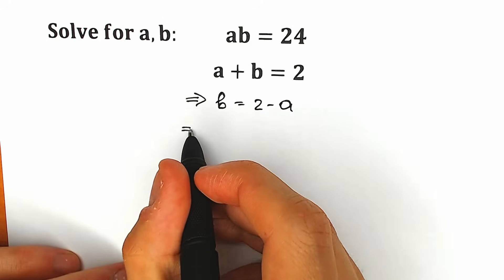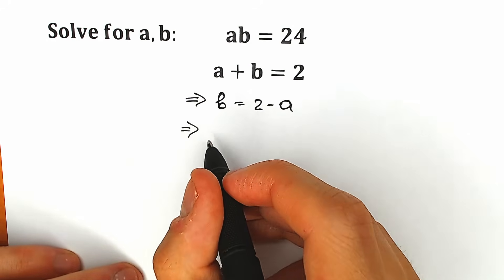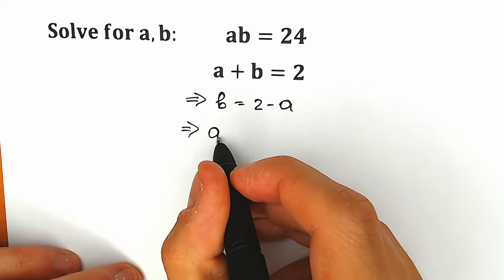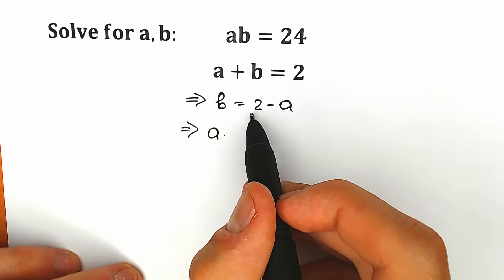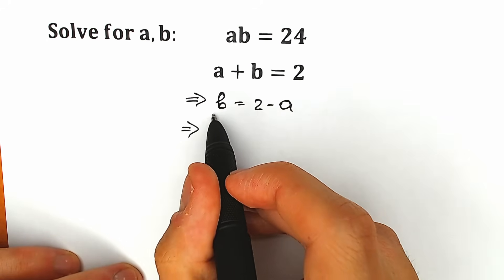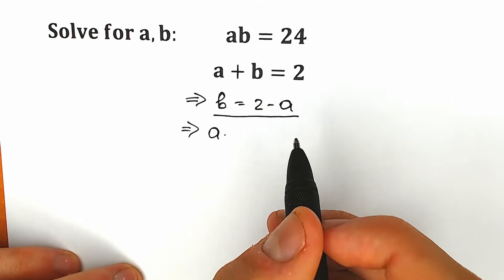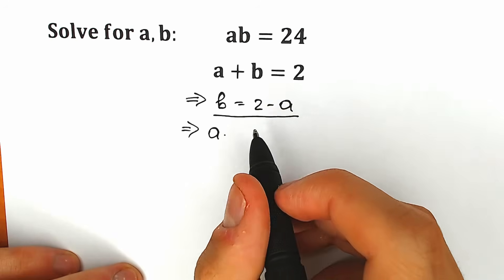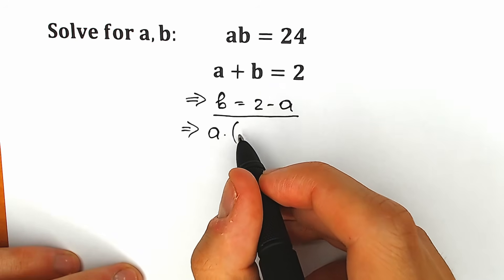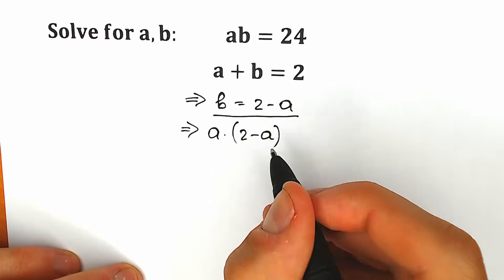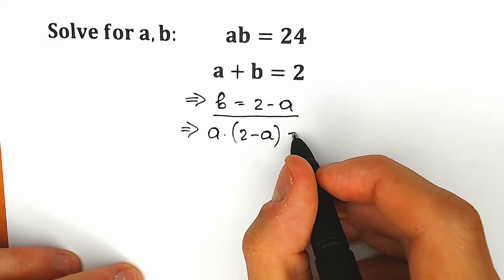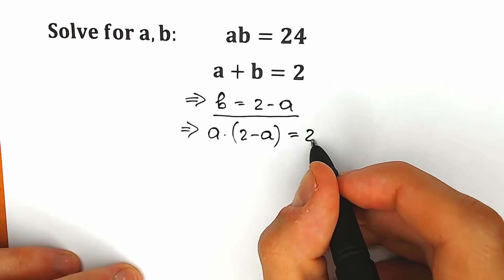So let's do this right now. As a result we have a times — instead of b we're going to plug in 2 minus a from the second equation — so we have a times (2 minus a) equal to 24.